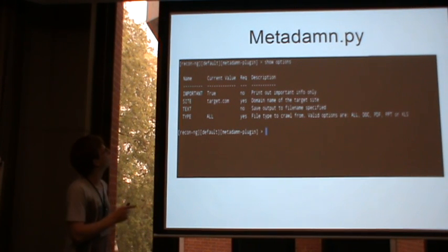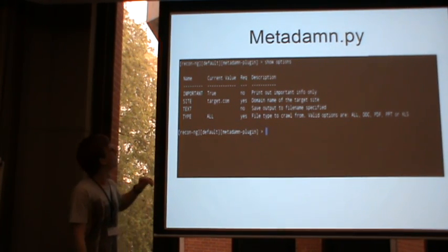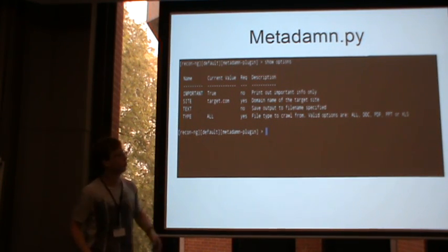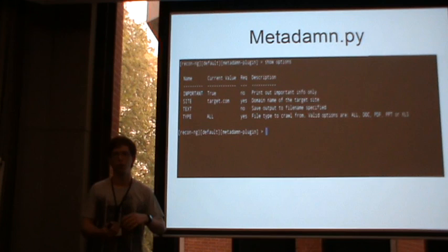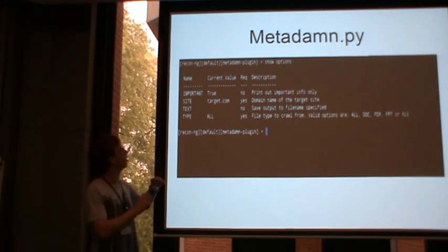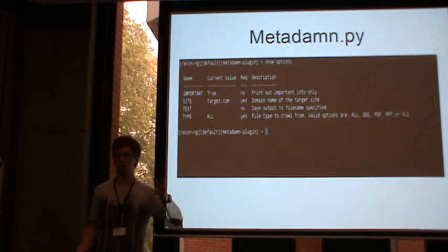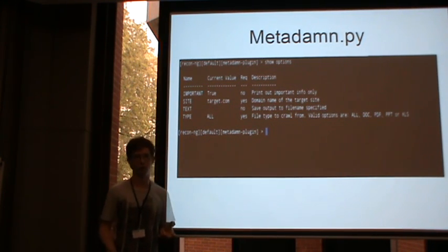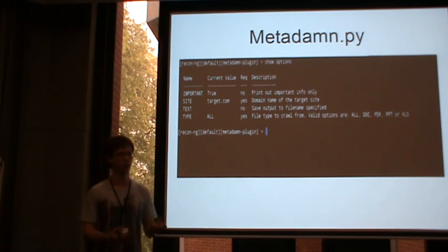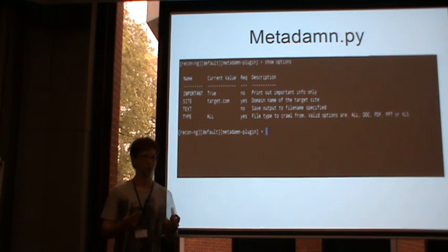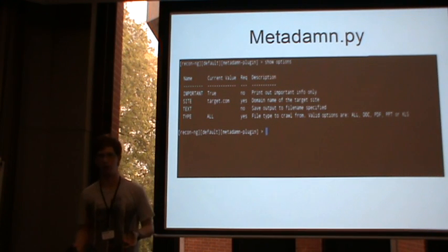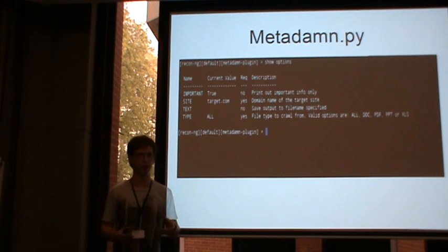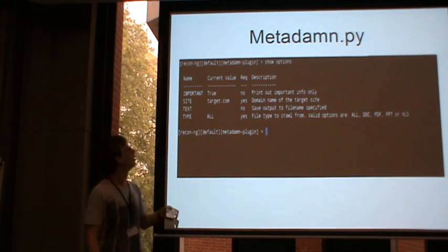This is what metadata.py looks like at the moment. Essentially, we have an 'important' option. The important option will go through and filter out information that isn't really important — stuff like how many pages are in the document or what the document's security is — and only display the information that's important for a pen test.